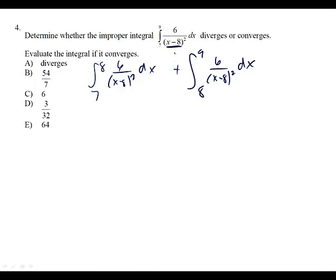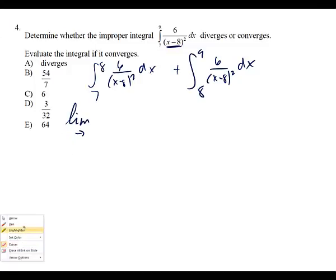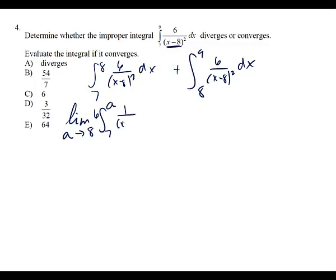If you don't know how I got 8: what makes the denominator zero? X equals 8. That's why I chose 8 as my convenient split — it's a vertical asymptote. So: limit as A approaches 8 from 7 to A of 6 times x minus 8 to the negative 2, DX, plus the limit as B approaches 8 from B to 9 of 6 times x minus 8 to the negative 2, DX.